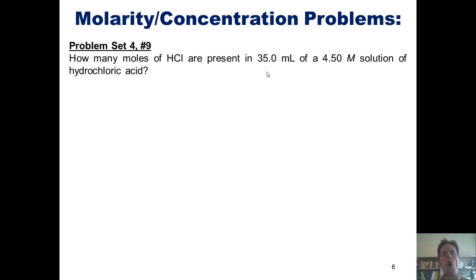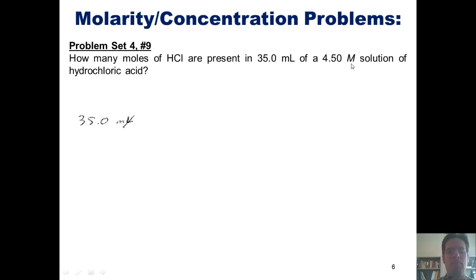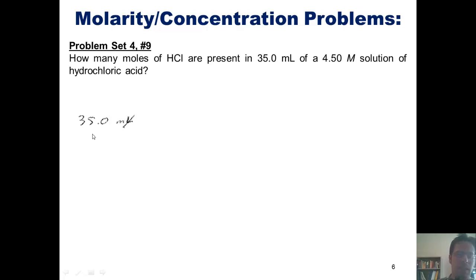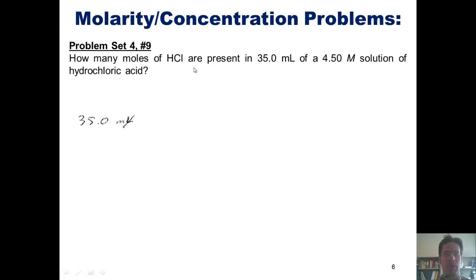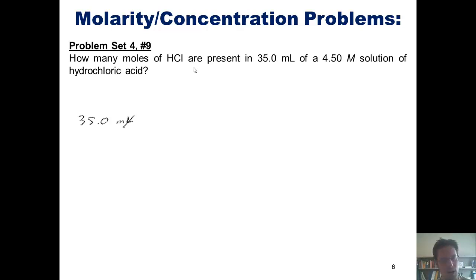To begin, as I almost always do in a dimensional analysis problem, I start with the value that I've been given that has no denominator units. In this case, that would be 35 milliliters. Keep in mind that the unit molar actually does have denominator units because molar is short for moles per liter. So we've written down our 35 milliliters, and we have to ask ourselves what we're trying to get to. The question asked how many moles of HCl are present, so the final answer should have the units moles of HCl. I'm going to focus on units and then insert the numbers afterwards.